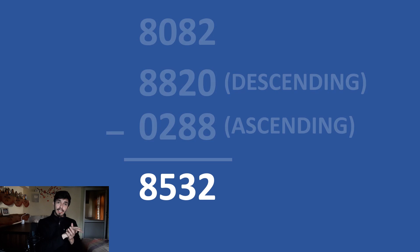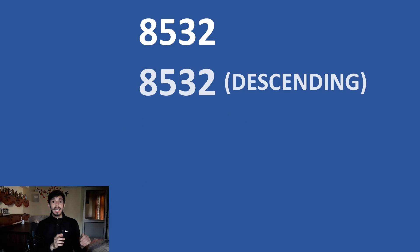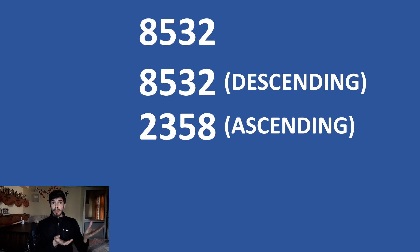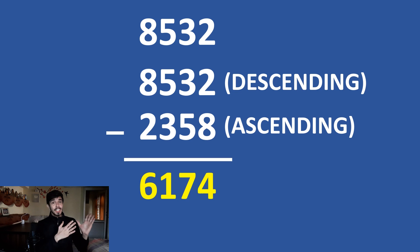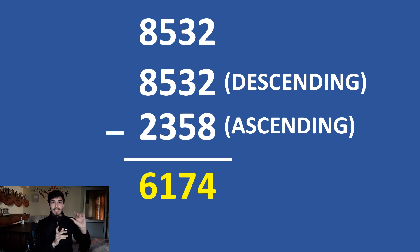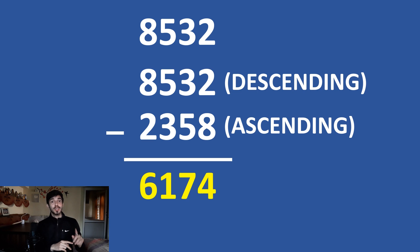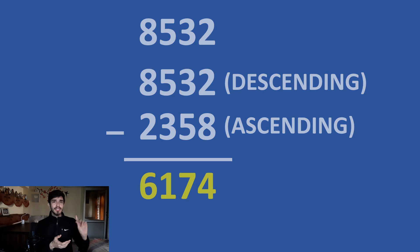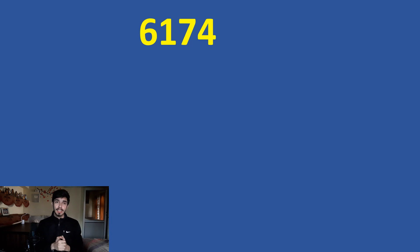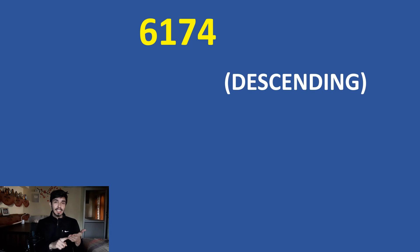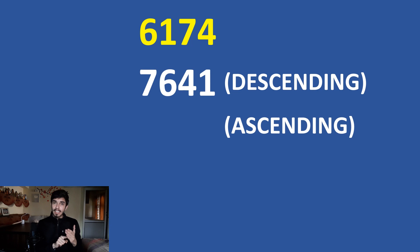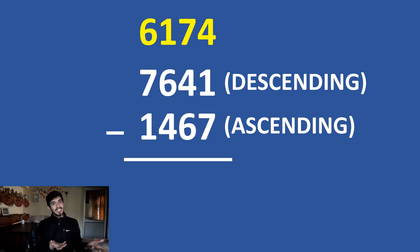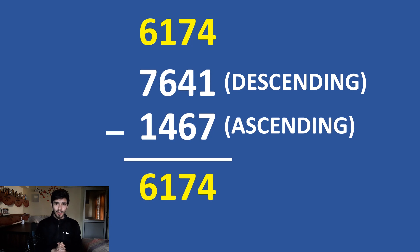Now repeat this with 8532. First arrange in descending order, then ascending order, and subtract. What we get is 6174. So if you apply this procedure to any four-digit number with at least two digits different, you will always reach this number. And if you apply this procedure on 6174 itself — first descending, then ascending, and subtract — you get 6174 again. It loops back to itself.